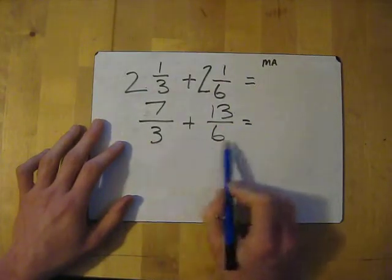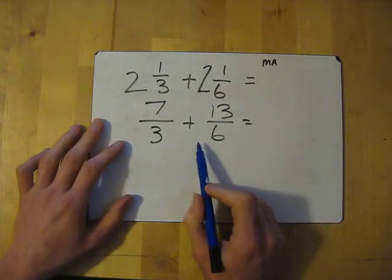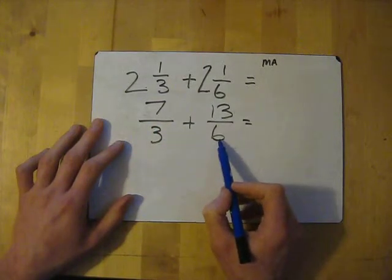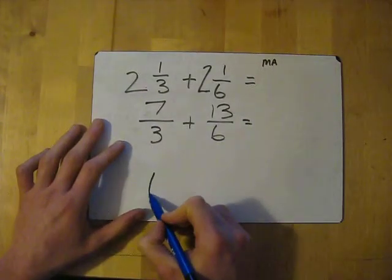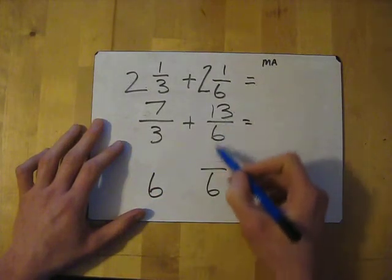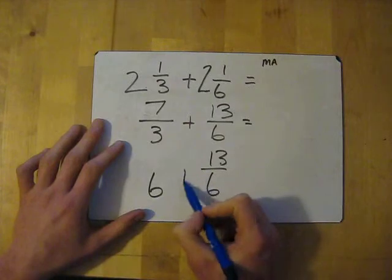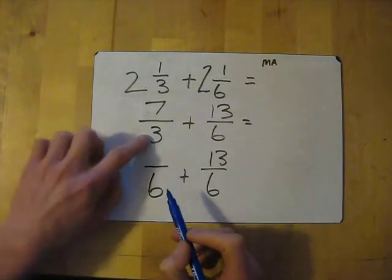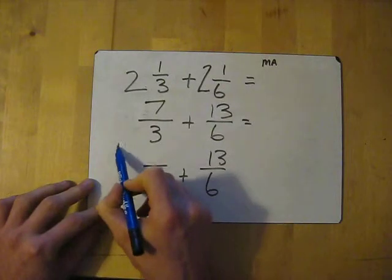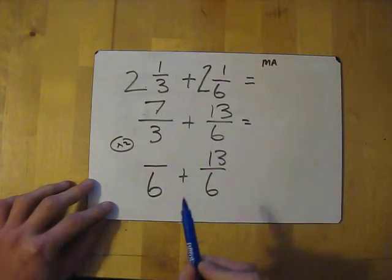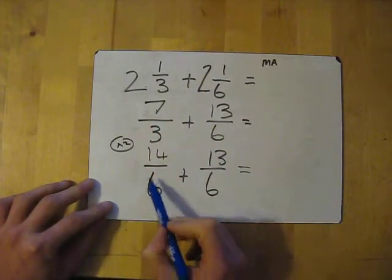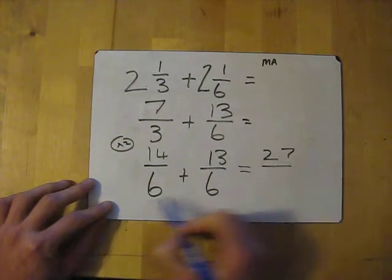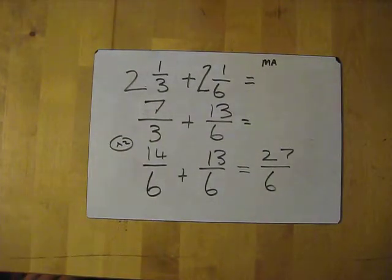We're adding so we need the same denominator. The common denominator between 6 and 3 is 6 — it fits into both. We don't need to change the 13 over 6. For 7 over 3, we multiplied the bottom by 2 to get 6, so we must also multiply the top by 2. That gives us the equivalent fraction in 6ths. Then we add the tops: giving 27, and keep the bottom the same — so 27 over 6.